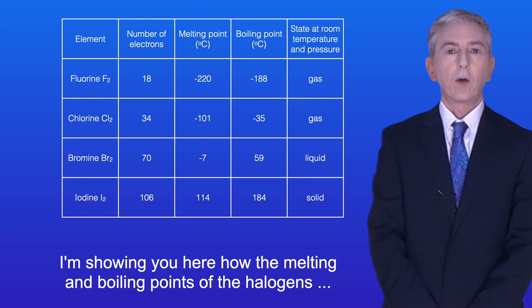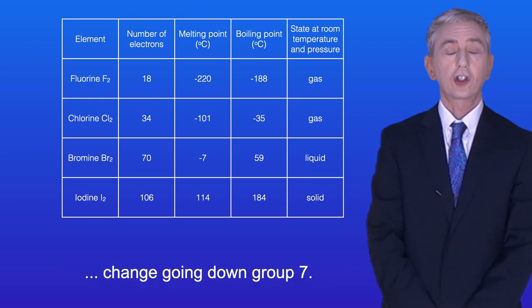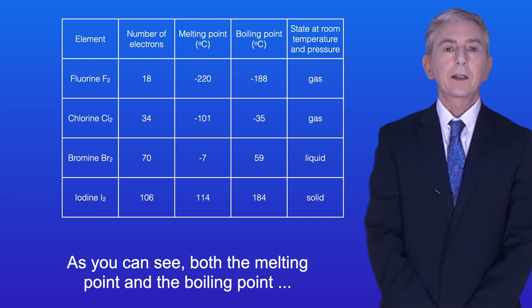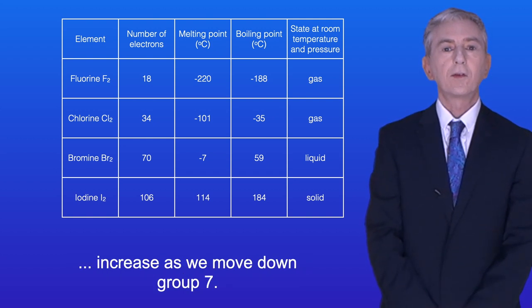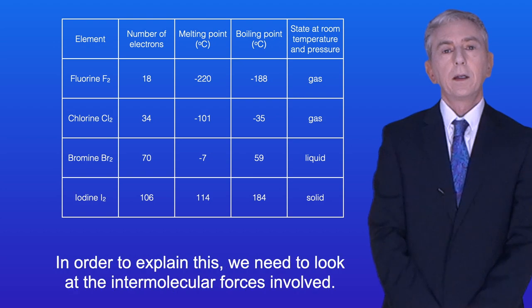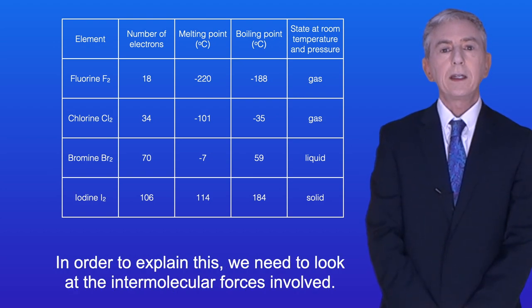I'm showing you here how the melting and boiling points of the halogens change going down Group 7. As you can see, both the melting point and the boiling point increase as we move down Group 7. Now, in order to explain this, we need to look at the intermolecular forces involved.